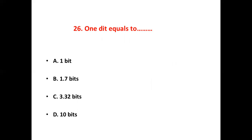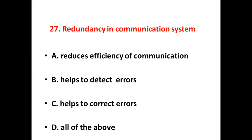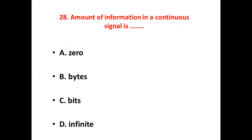Twenty-fifth bit: In a thermal power plant — Option A: potential energy is converted into electrical energy. Option B: electrical energy is converted into heat energy. Option C: mechanical energy is converted into electrical energy. Option D: heat energy is converted into electrical energy. Answer: Option D, heat energy is converted into electrical energy.